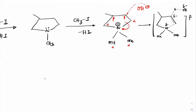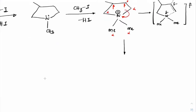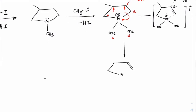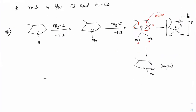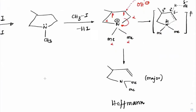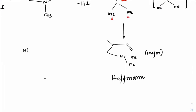After C–N bond breaking, the double bond forms here. NMe₂ comes out as a neutral molecule — charged species always try to become neutral. Similarly, OH₂ leaves to give a carbocation because it becomes neutral. The N(CH₃)₂ product is neutral as it leaves.